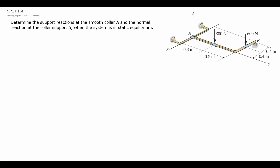In this 3D rigid body equilibrium problem, we're trying to find the reactions at the collar at A and the roller at B. So we want reactions at A and B. To do that, since we're in static equilibrium, we're going to want a free body diagram.